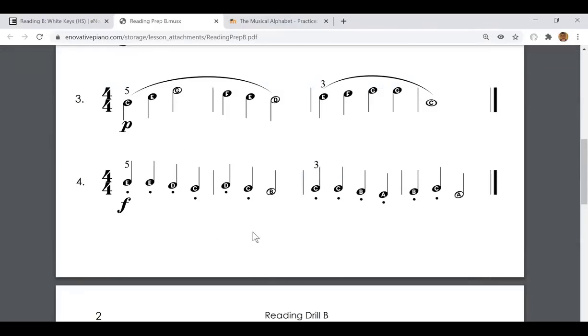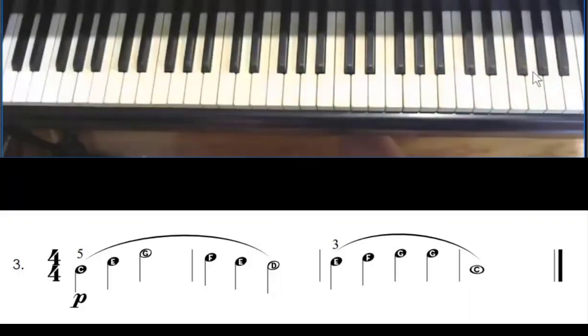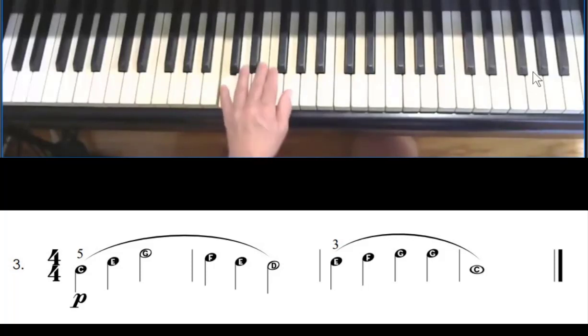So you've got to know where C is, and if you forget where C is, there's a little picture right there. It's just a reference picture. It tells you C is right there, right below the two black keys. So my pinky is on C.